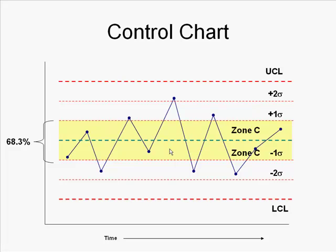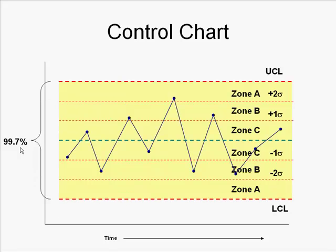So the first zone, called zone C, has almost two thirds of all of your data. The next zone up, zone B, that includes 95.5% of your data. And the total outside would be 99.7% of all of your points should fall within the control limits.